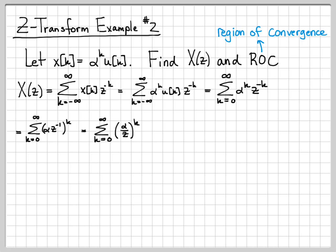If this quantity being raised to the K is magnitude larger than one, the sum blows up. We need the quantity alpha over Z's magnitude to be less than one for this to actually have a closed form solution. So when we write it in this way, it's kind of easy to check whether this actually converges or not. And it converges as long as that quantity is less than one.